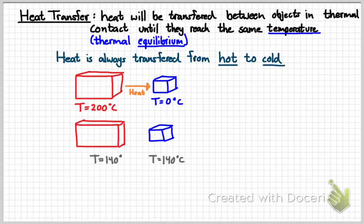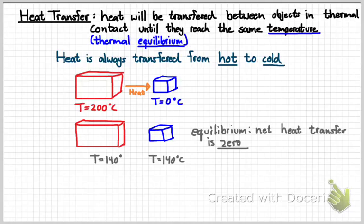It's not necessarily going to be exactly in between the two starting temperatures because that's going to depend on what the mass of both objects are and what they're made out of. So, again, when they reach equilibrium, the net heat transfer between them is zero.